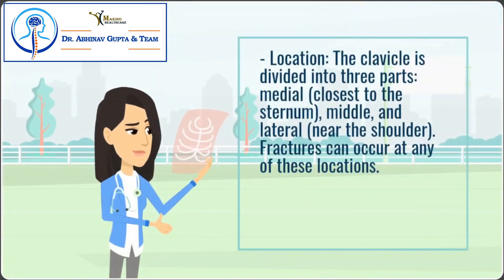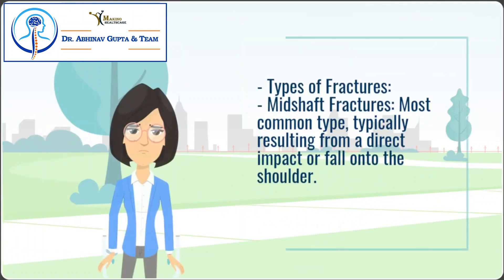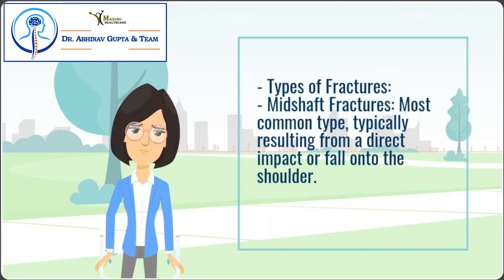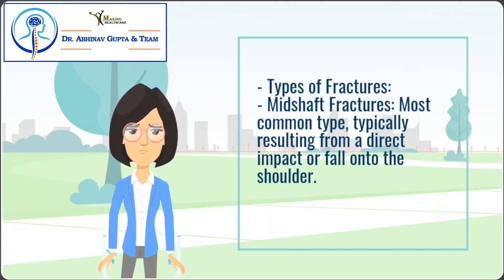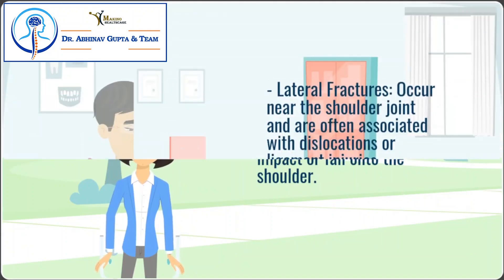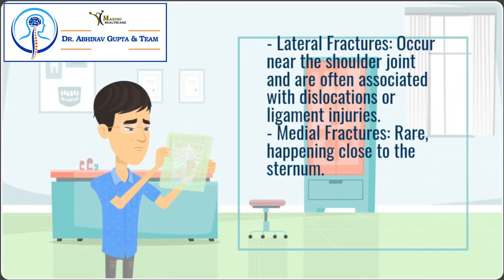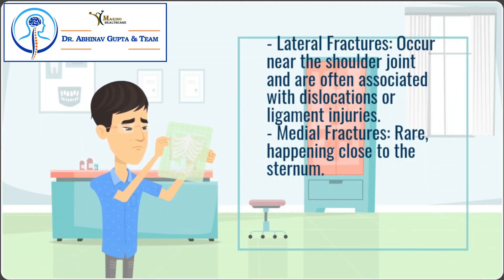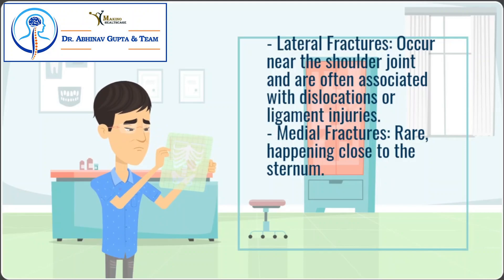Location: the clavicle is divided into three parts — medial, closest to the sternum; middle; and lateral, near the shoulder. Fractures can occur at any of these locations. Types of fractures: midshaft fractures are the most common type, typically resulting from a direct impact or fall onto the shoulder. Lateral fractures occur near the shoulder joint and are often associated with dislocations or ligament injuries. Medial fractures are rare, happening close to the sternum.